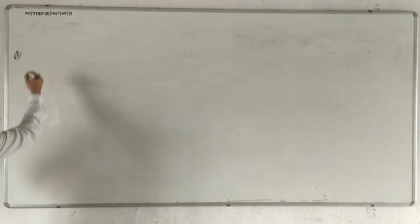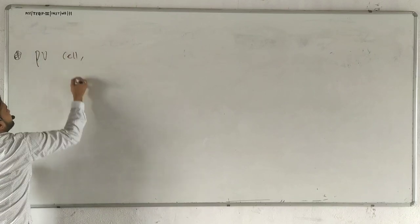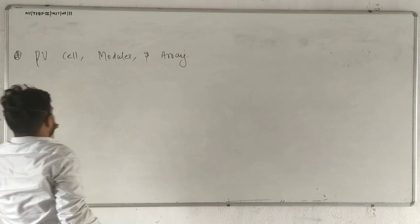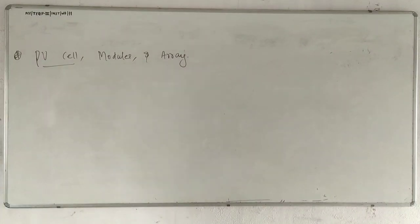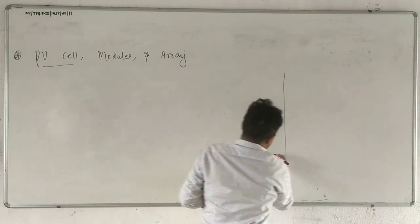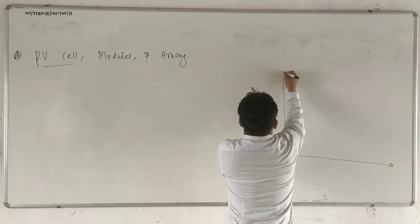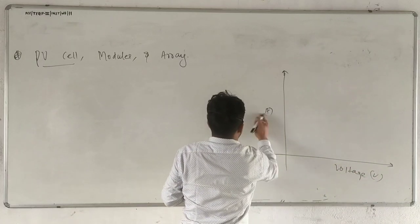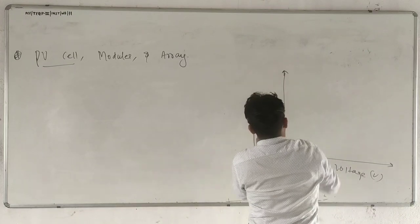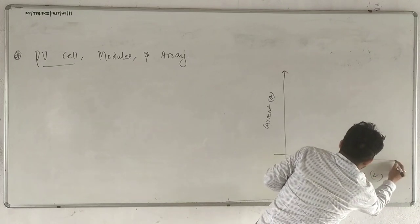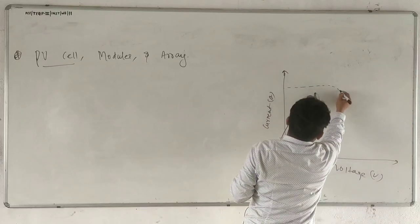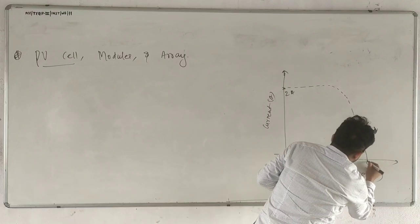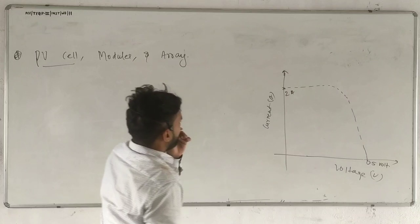Our topic is PV cell, module, and area. If you plot the IV plot of one unit PV cell, it will look like this: 2 EPM and 0.5V. This is the IV plot of one unit PV cell.